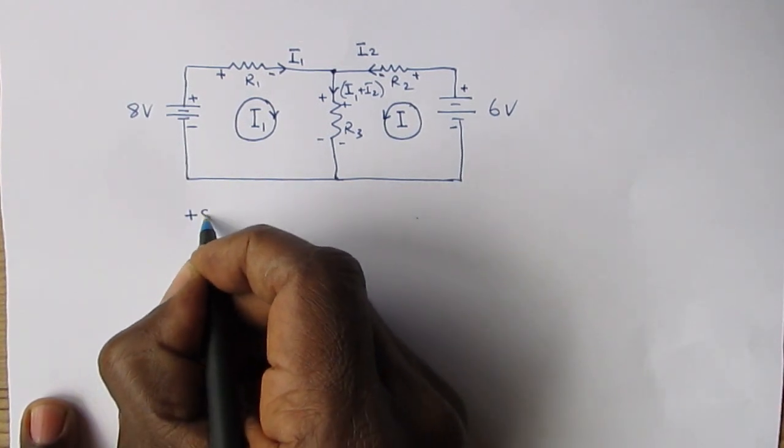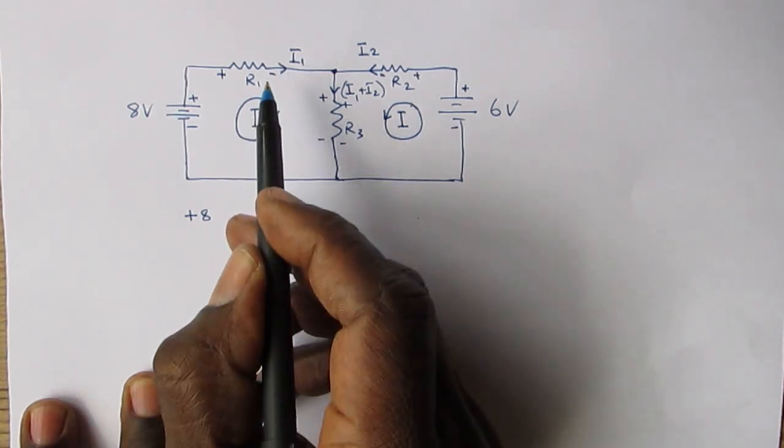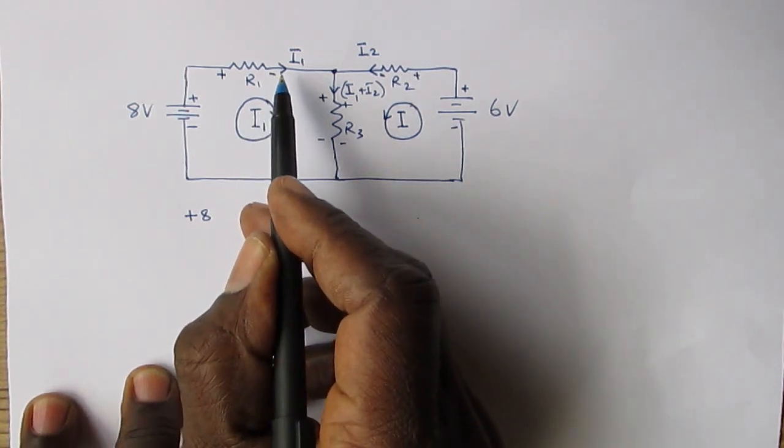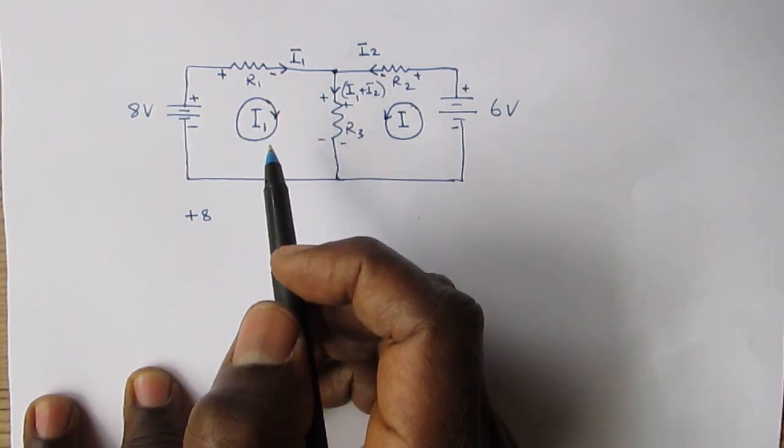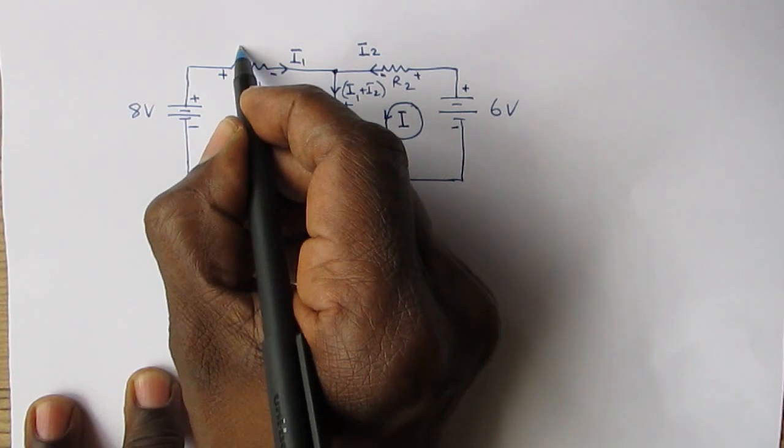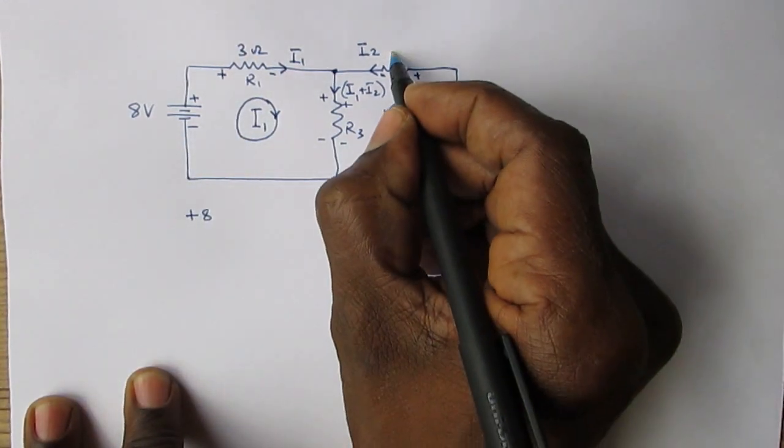From here to here would be a voltage fall. I forgot to put on the values of the resistors, so let's assume that this resistor is 3 ohms, this one is 4 ohms, and this one is 7 ohms.